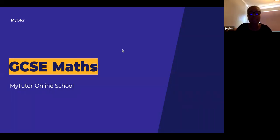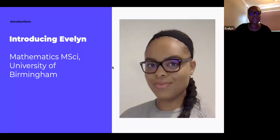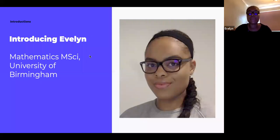Today we're going to be going through dependent and independent probability. This session is for Foundation GCSE Maths — if you are doing Higher it will still be relevant. This session will be an hour long. I'm Evelyn, studying Maths for my Master's degree at the University of Birmingham. If you have any questions throughout the session make sure to put them in the Q&A section. If you want to participate and show me your answers, put those in the chat. It is recorded and will be put on the MyTutor YouTube page, so you can always go back and look over anything you missed.